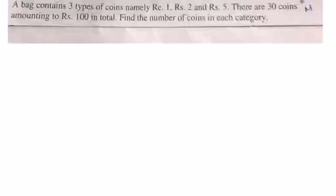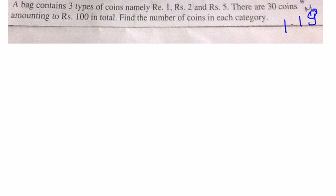This is example 1.19 in your textbook. A bag contains three types of coins: 1 rupee coins, 2 rupee coins, and 5 rupee coins. The total number of coins is 30, and the sum of all coins amounts to 100 rupees.